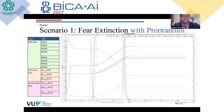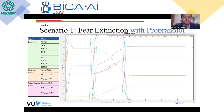Moving on to the first scenario: fear extinction with propranolol. In the base layer we can see the fear response — the conditioned fear response X5 — which goes up, then propranolol is administered, leading to a reduction in norepinephrine. We then see an increase in the learning activity of the hippocampus as well as the ventral medial prefrontal cortex, which in turn leads to a reduction in the fear response.